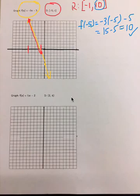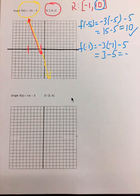So that one checks out. 10 matches up right here. And now let's see if negative 1 works. So we're going to plug in f of negative 1. So that's going to give us negative 3 times negative 1 minus 5. So that becomes positive 3 minus 5 or negative 2.